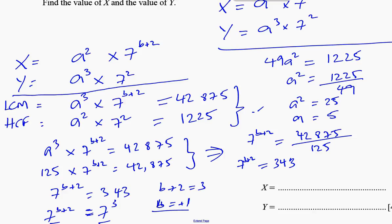That is not our answer. The question says find the value of X and the value of Y. It doesn't say find the value of a and b. So we need to know what a and b are, so a is 5 and b is 1. They told us X can be expressed in this form. We can just replace the a with 5 and the b with 1.